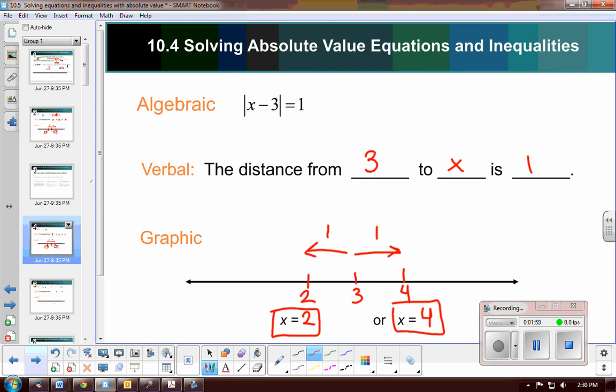Now remember, you can always check it. So if I did a quick check, does the absolute value of 2 minus 3 equal 1? Well, yes it does. And does the absolute value of 4 minus 3 equal 1? Yes it does. We've found it.